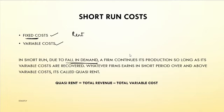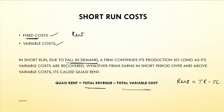Whatever the firm earns in the short period over and above the variable cost is called Quasi Rent. Quasi Rent equals Total Revenue minus Total Variable Cost. Whereas actual rent was Total Revenue minus Total Cost.